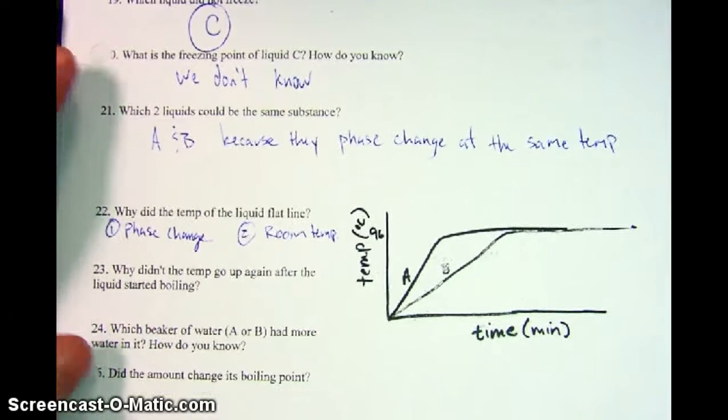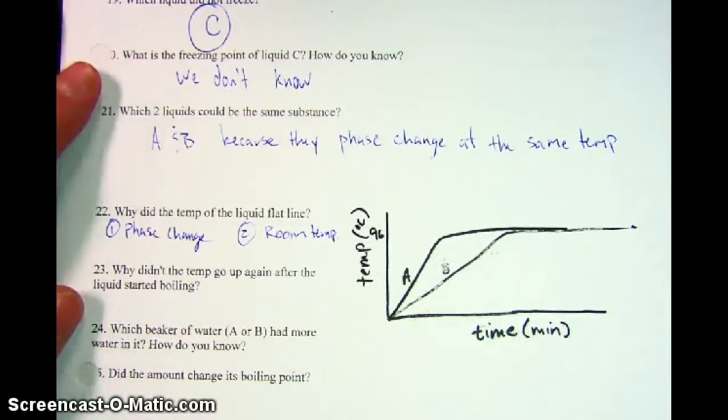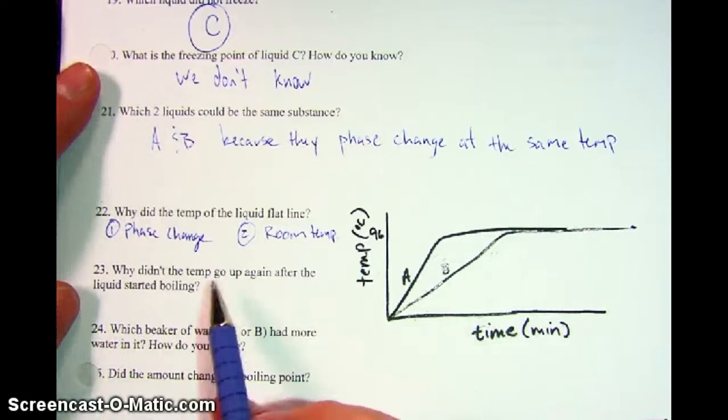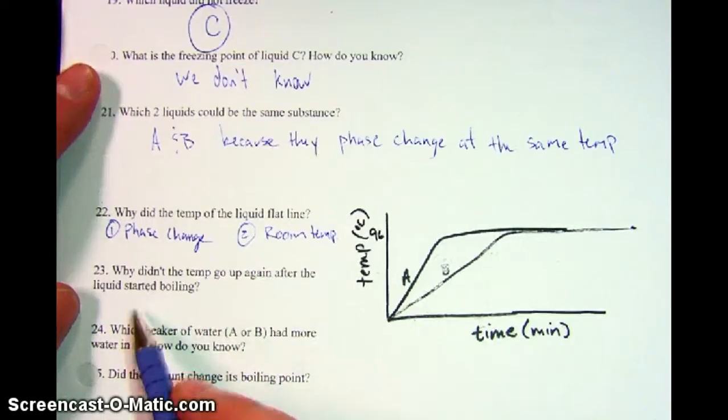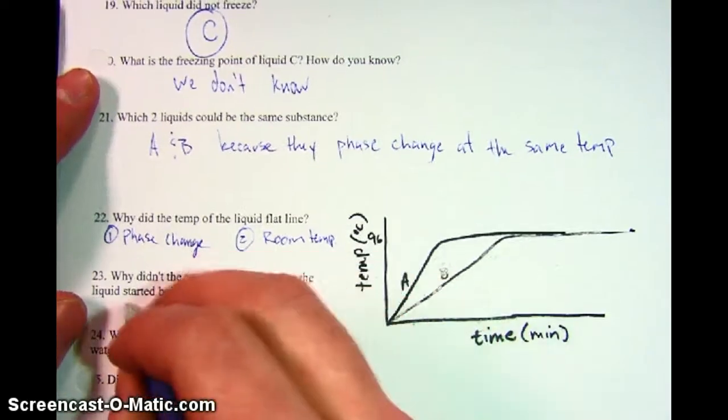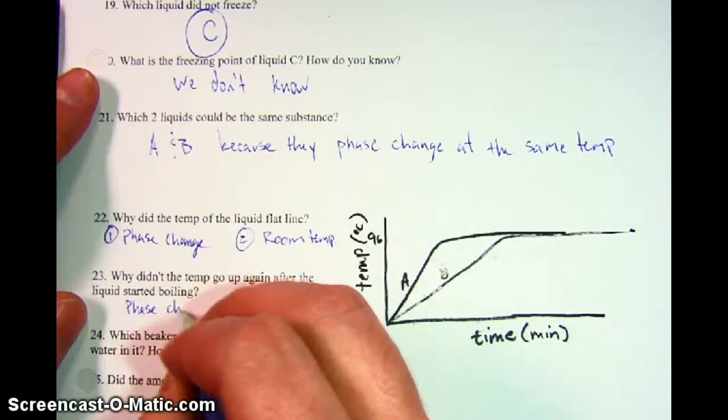Number 23, why didn't the temperature go up again after the liquid started boiling? So now they're telling us that this is a boiling point. Okay, so why didn't the temperature go up after the liquid started boiling? That's because phase change kept happening.